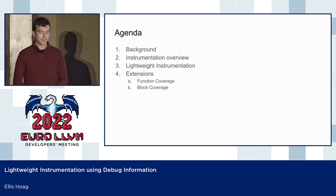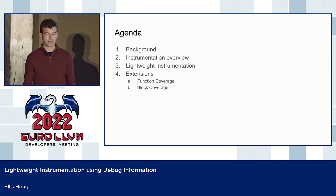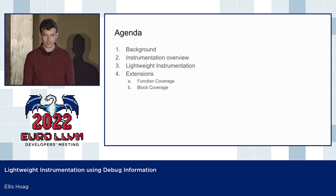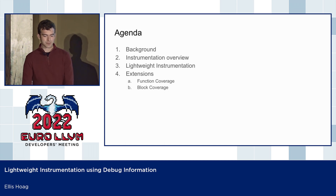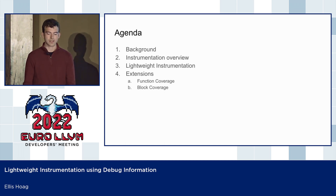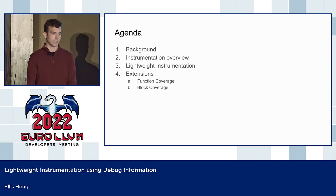I'll start with some background to help explain why we need instrumentation with low size overhead. Then I'll give an overview of existing instrumentation in LLVM, and I'll focus on some key details. Next, I'll explain lightweight instrumentation and go over the results. And lastly, I'll talk about some extensions to lightweight instrumentation by changing the profile data we collect to get even smaller size overhead.